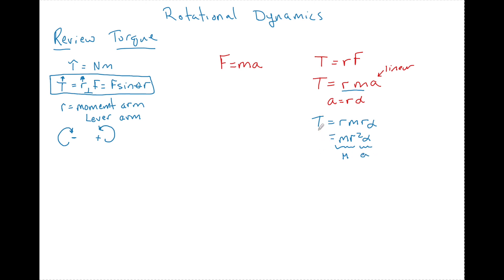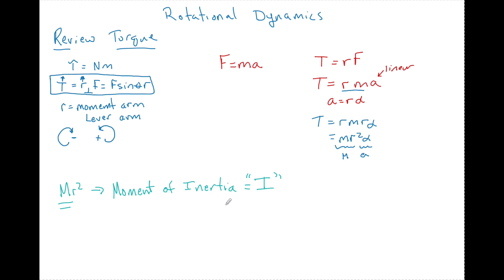So now we see that torque — the force that causes an object to spin — equals M R squared times alpha. This M R squared has a name and a variable: we call it the moment of inertia, and its variable is capital I. Every object has its own moment of inertia, just like every object has its own mass. So the torque formula in general form is: torque equals I times alpha, where I acts as the resistance to change, just like mass does.